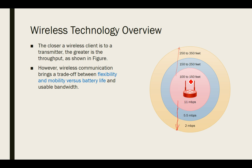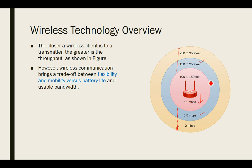If you are in the 100 to 150 feet range, your speed will be 11 Mbps. But if you are in the 150 to 250 feet range, your speed is reduced to 5.5 Mbps, and so on.